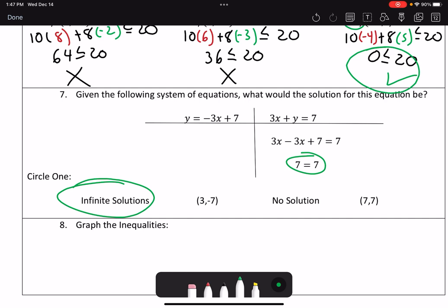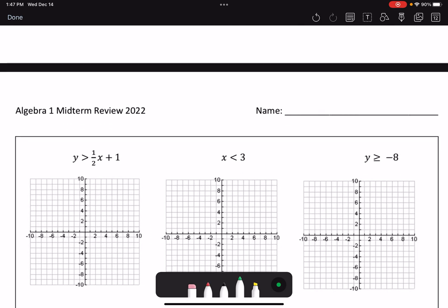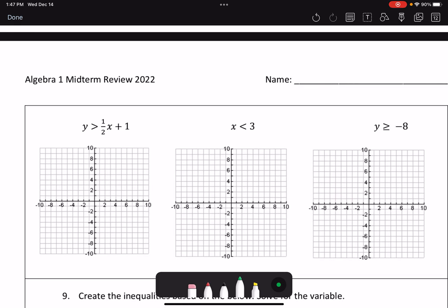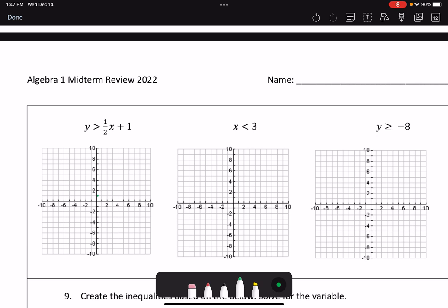And we had a little misprint here, so we need to graph the linear inequalities. So go on to page 8. This first one says y is greater than 1 half x plus 1. So I'm going to start at 1, go up 1 to the right 2, or I could go down 1 to the left 2. Guys, this is going to be a dashed line because it is just greater than. And I'm going to shade above this line, so it's going to be this region.